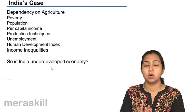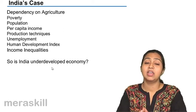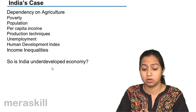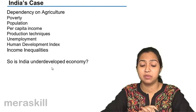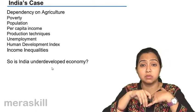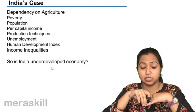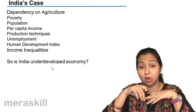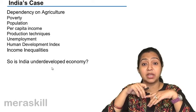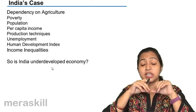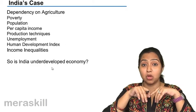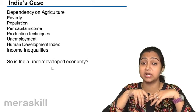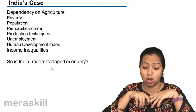So now, we have studied all these points — why we were called a backward or underdeveloped economy. We were called underdeveloped because a large number of the population depended on agriculture, there was widespread poverty, high population, low per capita income, backward production techniques, high unemployment, and most importantly disguised unemployment, where it seems that people are employed but actually they are not.